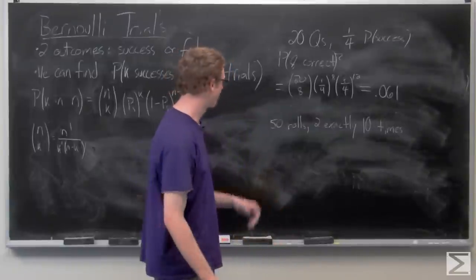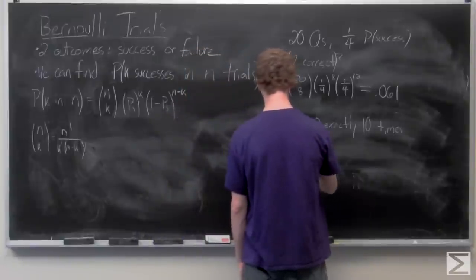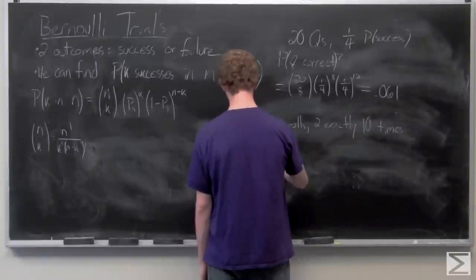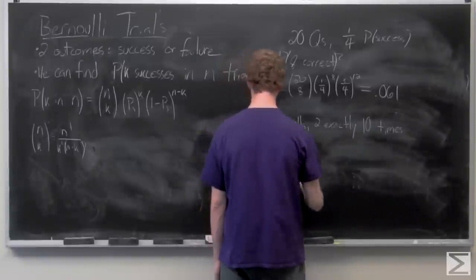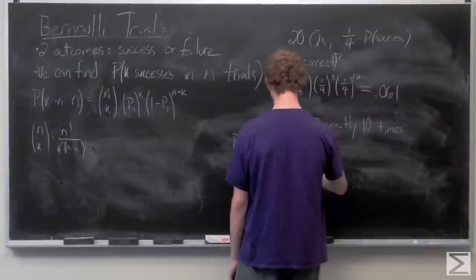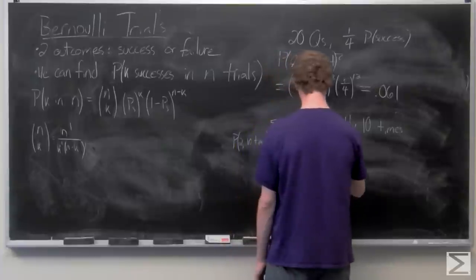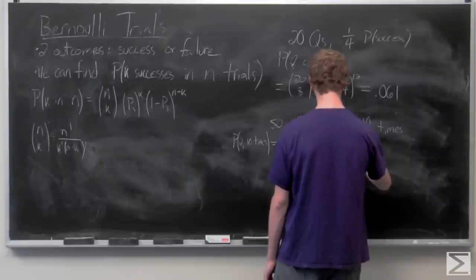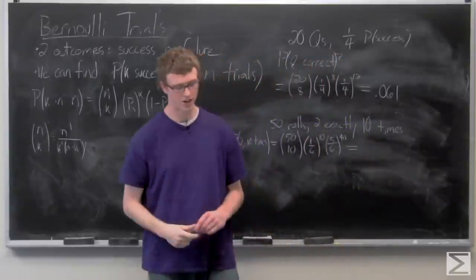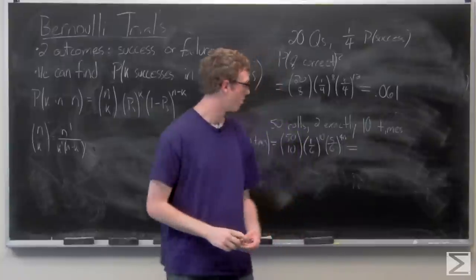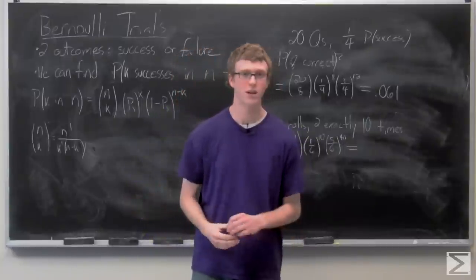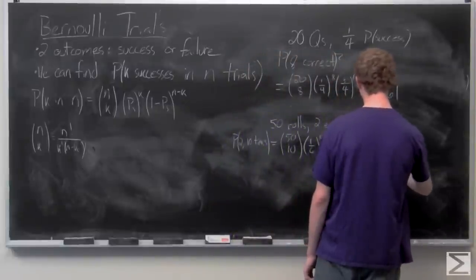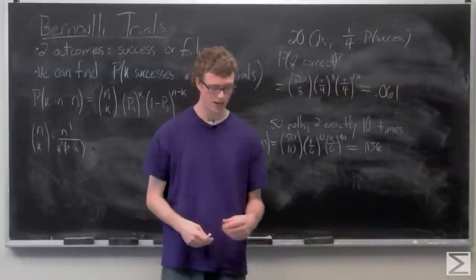So we're going to go ahead and just plug those in. Again, you're going to need a calculator to multiply this all out because that would be a nightmare to calculate by yourself, but it comes up as 0.1156. So that's the probability of getting a two exactly 10 times.